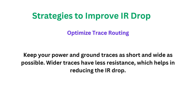Next is to optimize your power and ground routing. Keep your power and ground traces as short and as wide as possible — wider traces have lesser resistance, which helps in reducing IR drop. You need to design a good power mesh, also called power and ground routing, in the topmost metal layer before starting your layout. That is the main thing for layout design and will significantly improve IR drop.